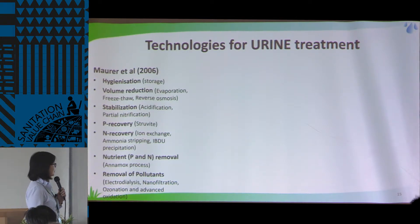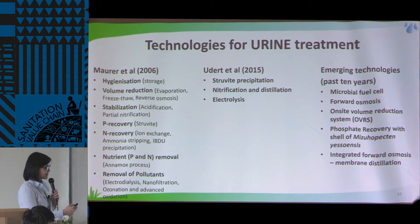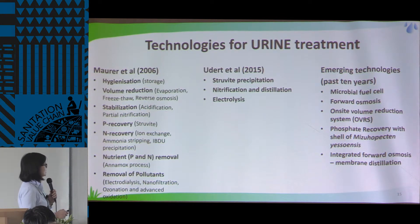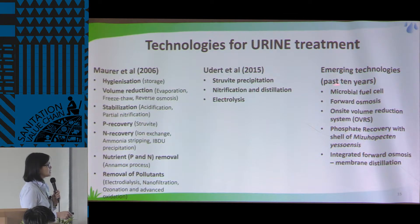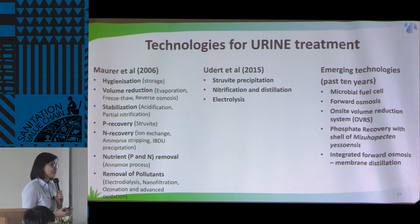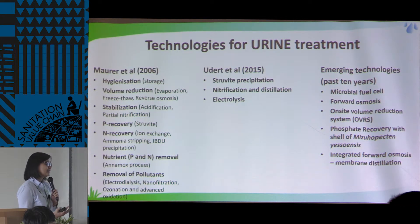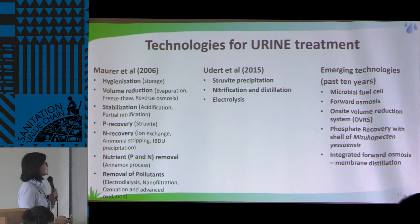This list shows a wide range of technologies for urine treatment — from simple storage or volume reduction by evaporation to more complicated ones like electrolysis or microbial fuel cell. The cost varies depending on the type of technology installed.